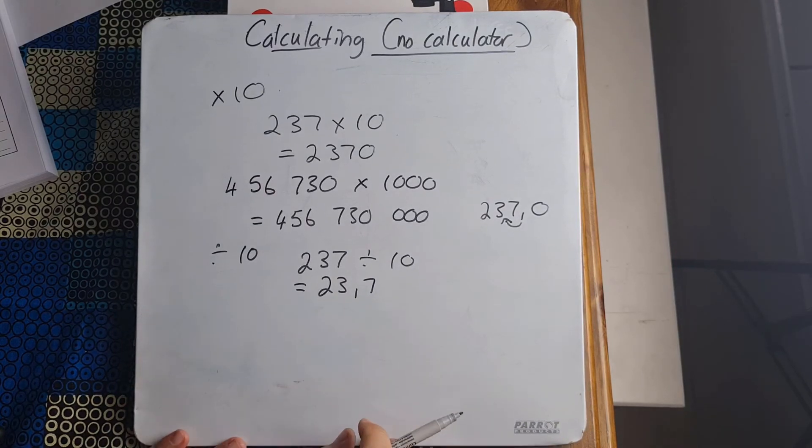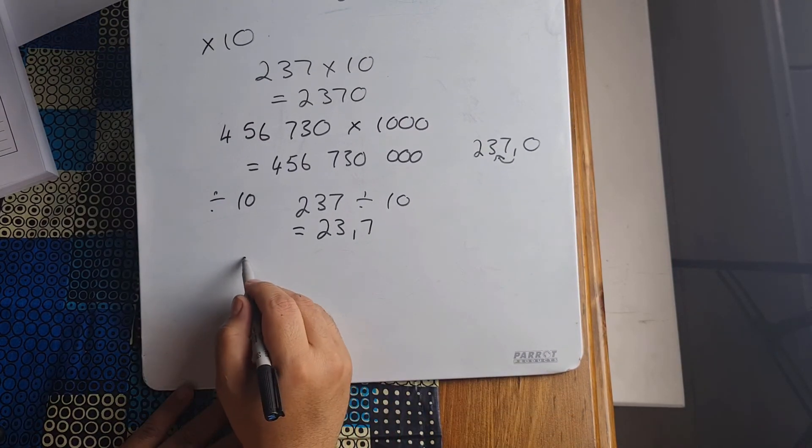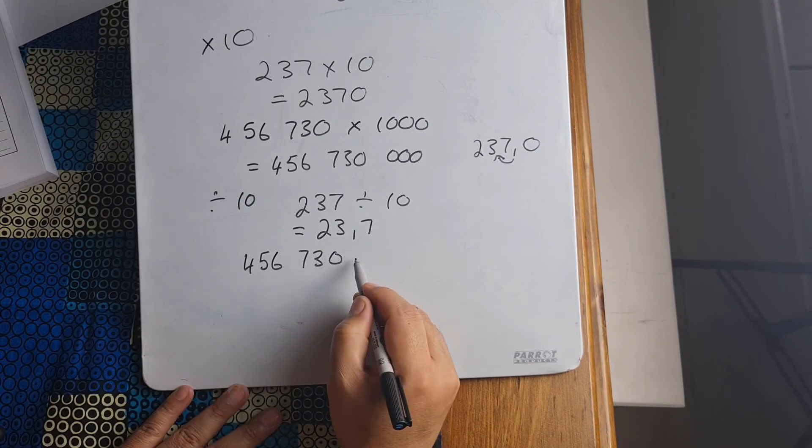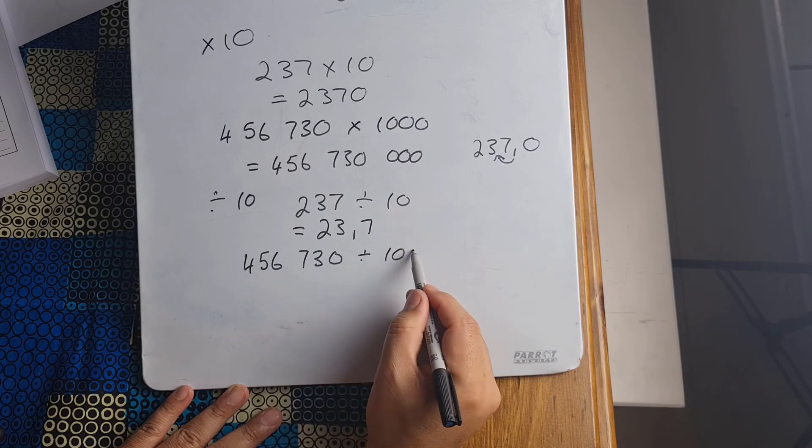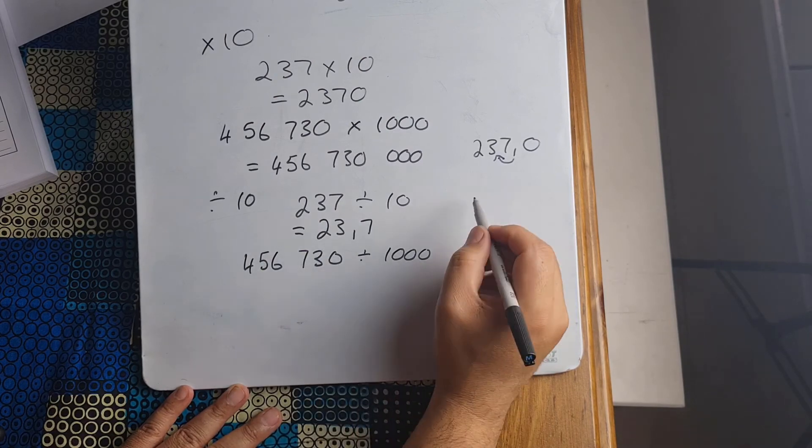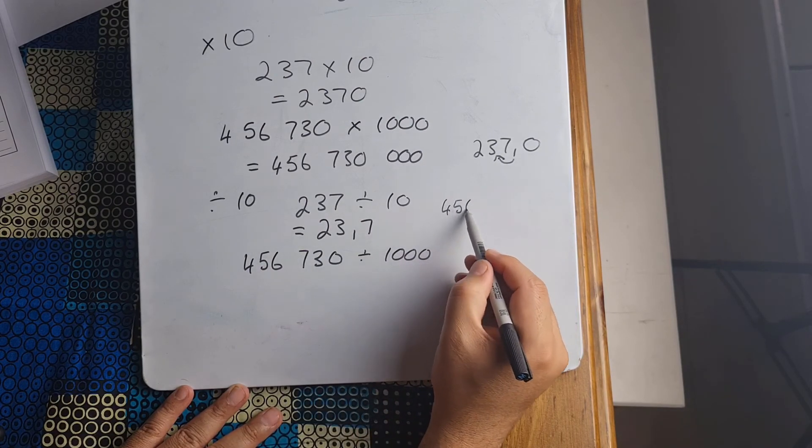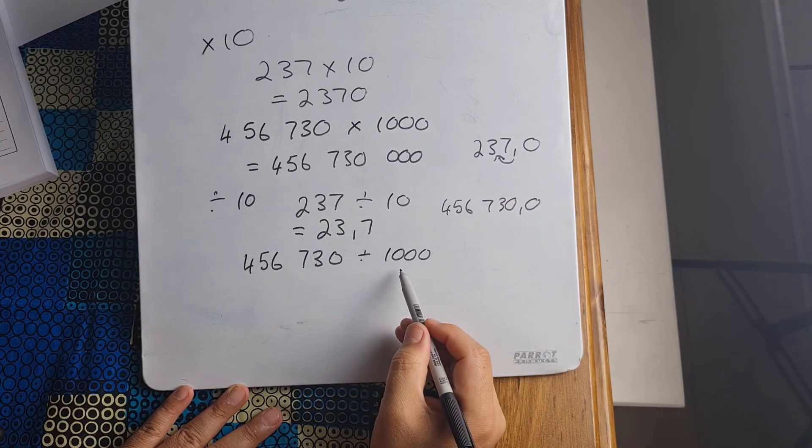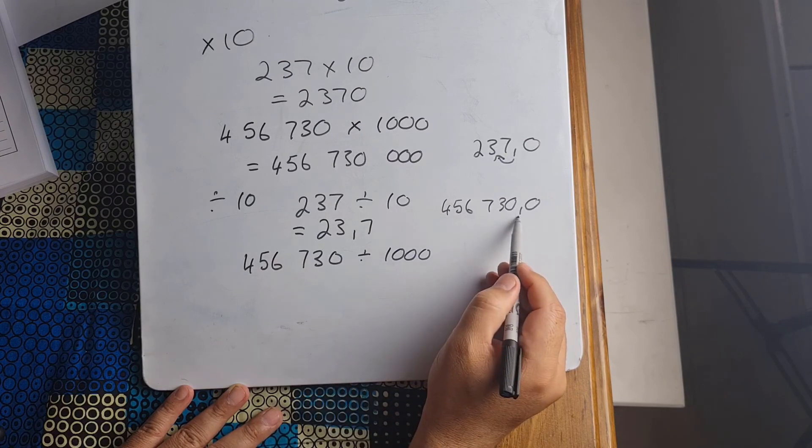What about this big number? If I use 456,730 and I want to divide that by a thousand, remember what am I saying? It's 456,730.0. So what am I going to be doing? I'm going to be taking that comma and I'm going to be moving it